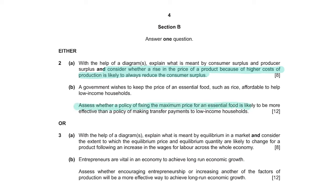Now look at question 2b. It says: 'Assess whether a policy of fixing a maximum price for an essential food is likely to be more effective than a policy of making transfer payments to low-income households.' Again, we'll cover what maximum price is and the conditions necessary, but we will also focus on evaluation points — for example, if you are putting a maximum price there will always be a shortage, so one needs to address how to get rid of that shortage. These are essential evaluation points. The 2a has two marks for evaluation and 2b has four marks, and doing well in evaluation is what converts a B into an A.